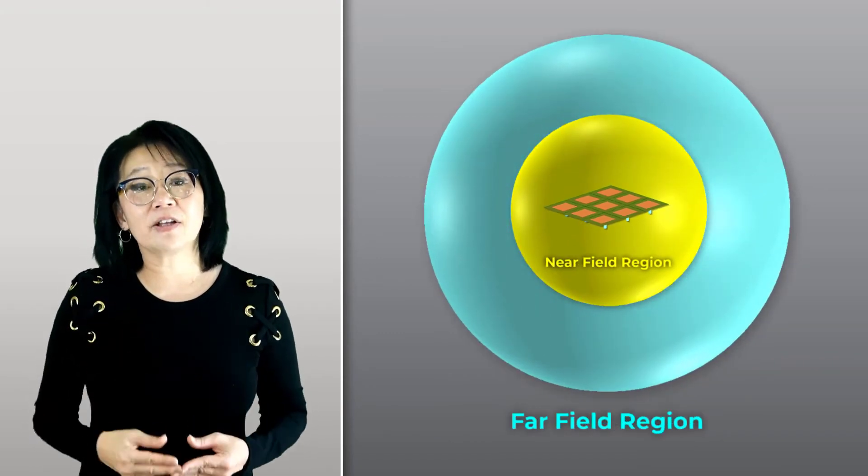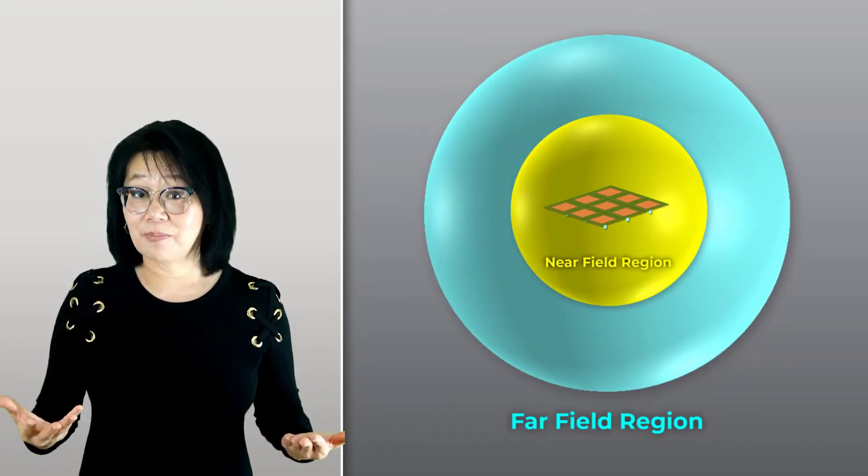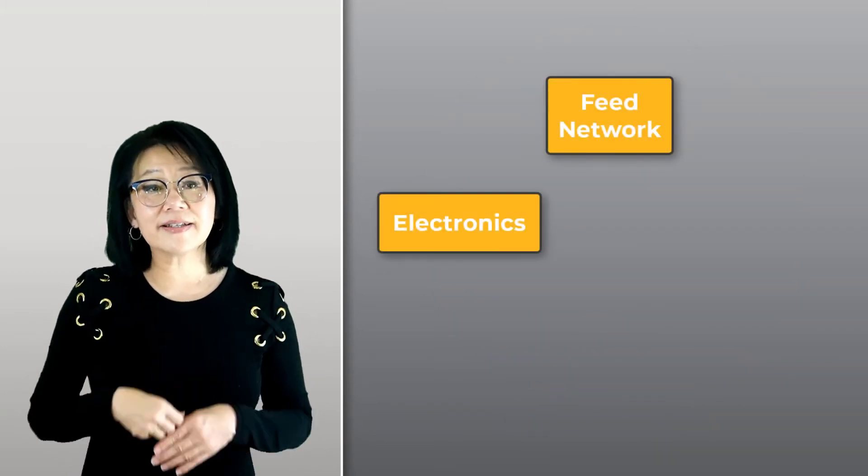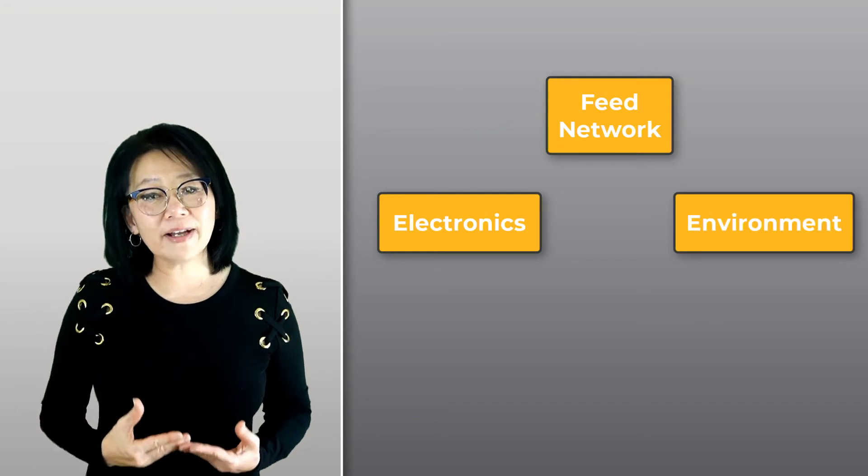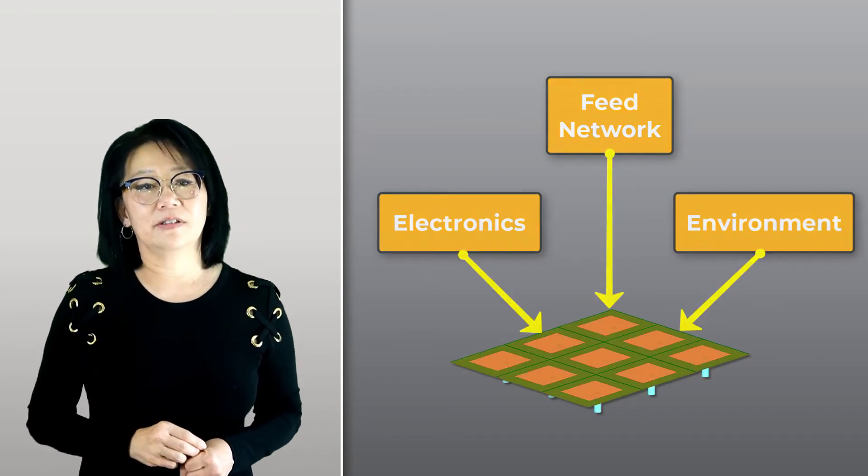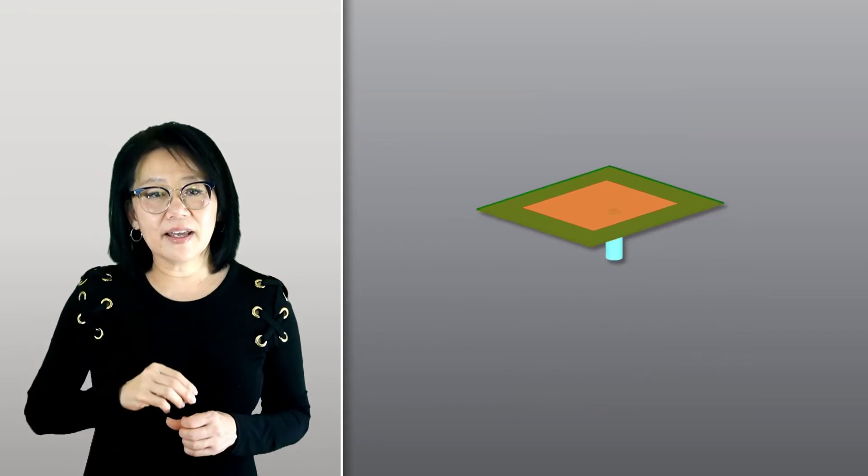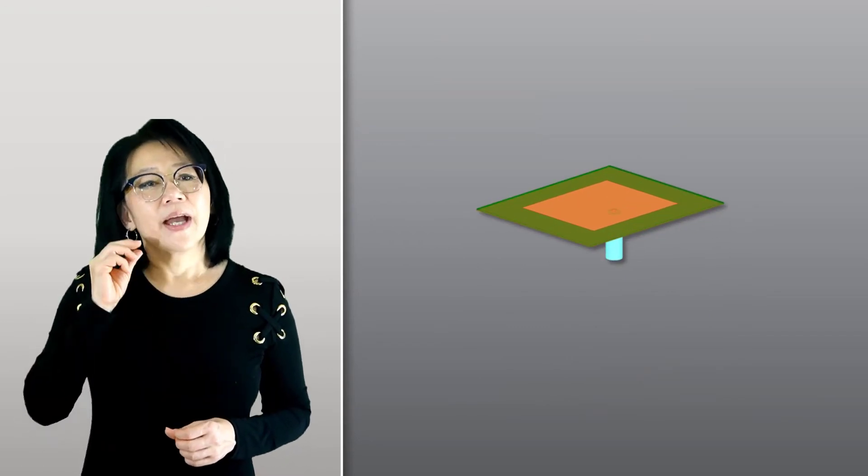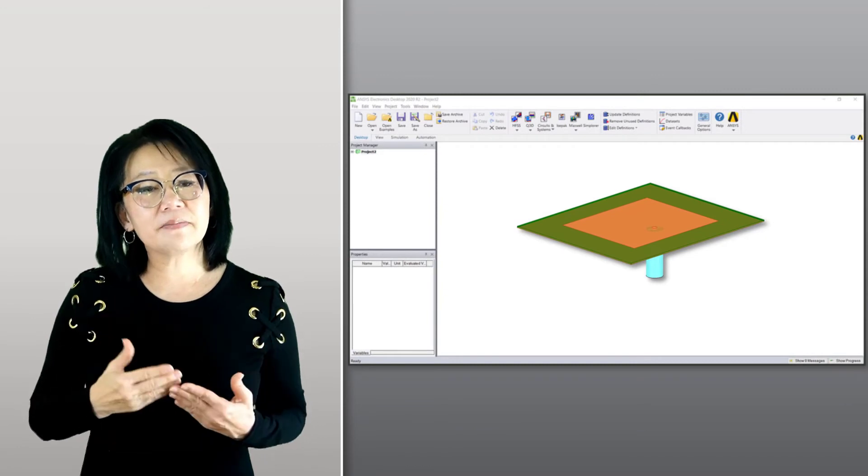The array factor is a far-field evaluation of the array radiation pattern. The feed network, the electronics, and the environment surrounding the array is also essential. The antenna is not in itself isolated—electromagnetic modeling and simulation of that antenna element, the array, and the environment is necessary.